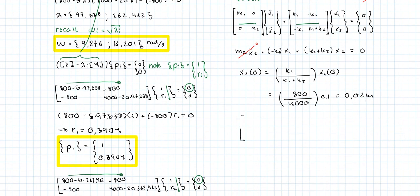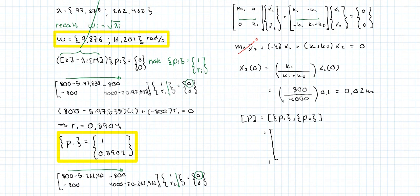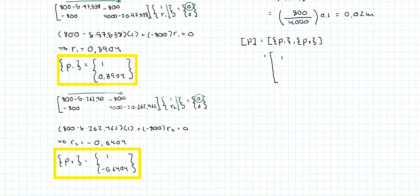We're going to build the P matrix, also called the modal matrix. Remember that it's simply made up of the eigenvectors. So P is [1, 1; 0.3904, minus 0.6404]. So we also need to calculate the inverse of the P matrix. I'm going to simply write the answer.